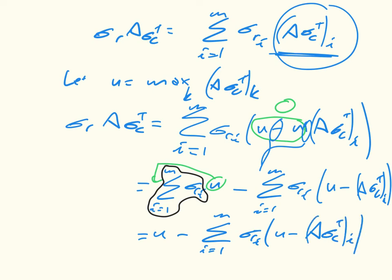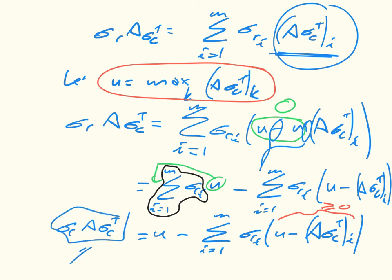Now by definition we've said that U is the maximum of these values, so we know that this expression here is greater or equal to zero. And the only way we can make our utility as large as possible, which is ultimately what we're trying to do, is to make this sum as small as possible. The way to make this sum as small as possible is to make it zero, and we can make it zero in two ways.